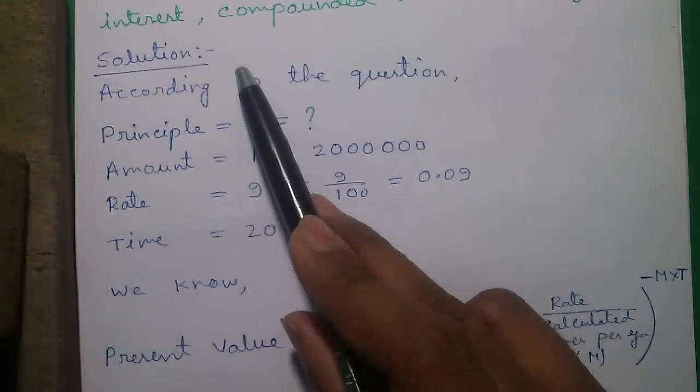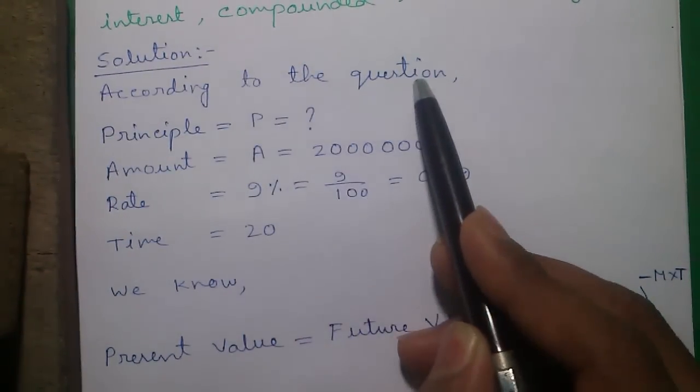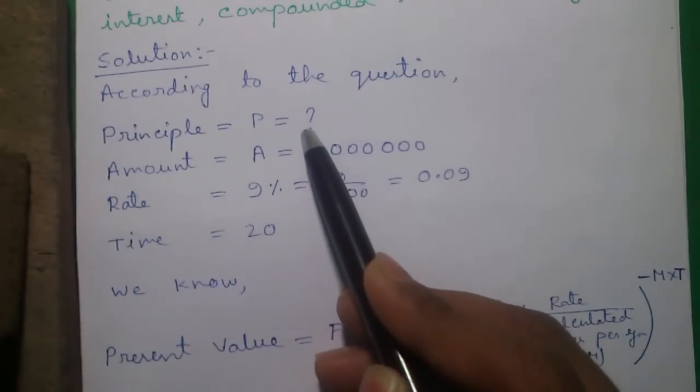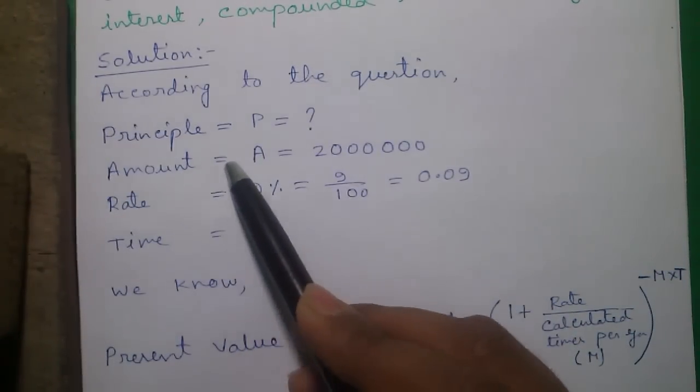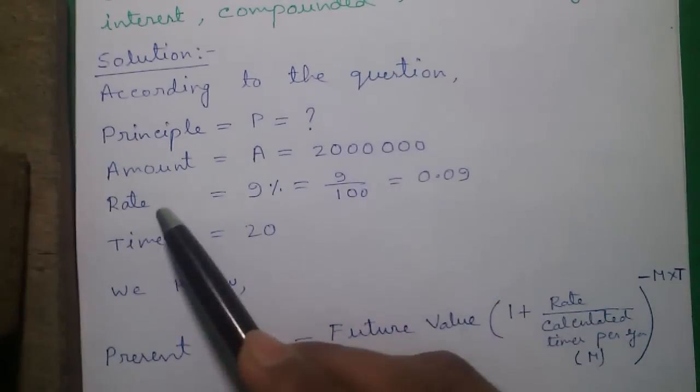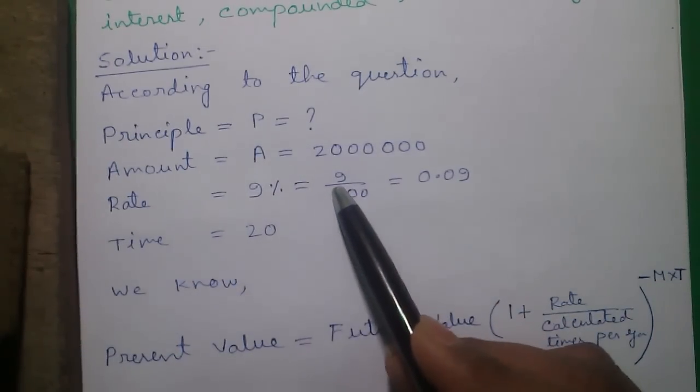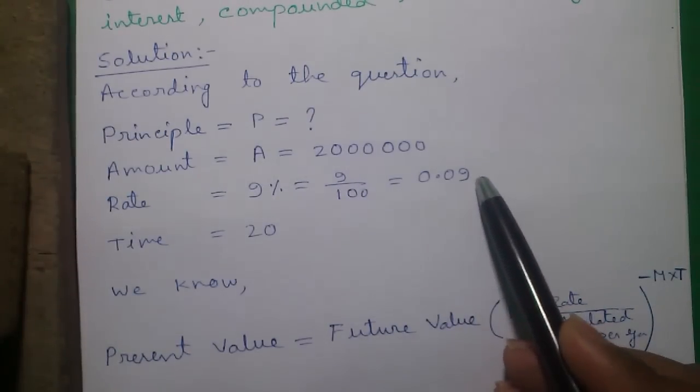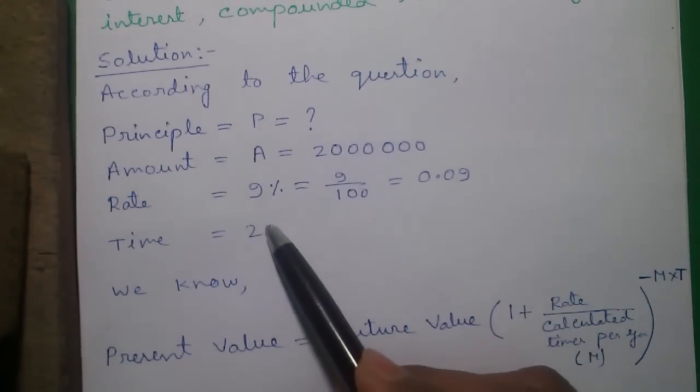So this is our solution. According to the question, the principal or P we have to find out, and the amount or A equals to 20 lakhs after maturity, and rate of interest is 9% or 9 divided by 100 equals to 0.09, and time is 20 years.